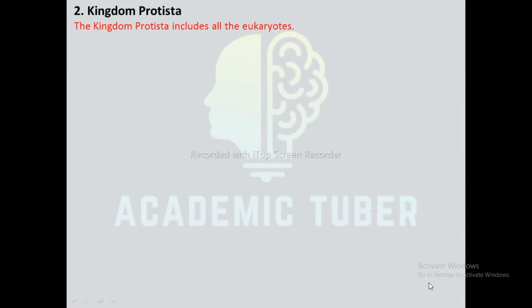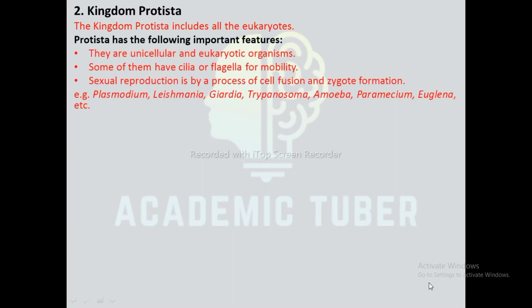Kingdom Protista: The kingdom Protista includes all the unicellular eukaryotes. Important features: they are unicellular and eukaryotic organisms; some of them use cilia or flagella for mobility; sexual reproduction is by a process of cell fusion and zygote formation. Examples: Plasmodium, Leishmania, Giardia, Trypanosoma, Amoeba, Paramecium, Euglena, etc.